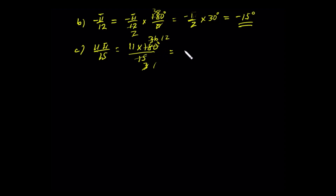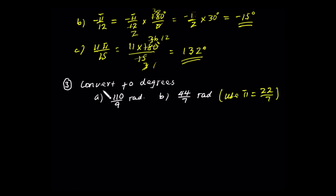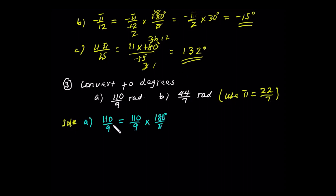If you convert it to degrees, you can use pi. In terms of pi, it is simply a pure number. We have to use pi which is equal to 22 over 7 to convert this one — here is the rational approximation. Solution: 110 over 9 radian is equal to 110 over 9 times 180 degrees over pi.